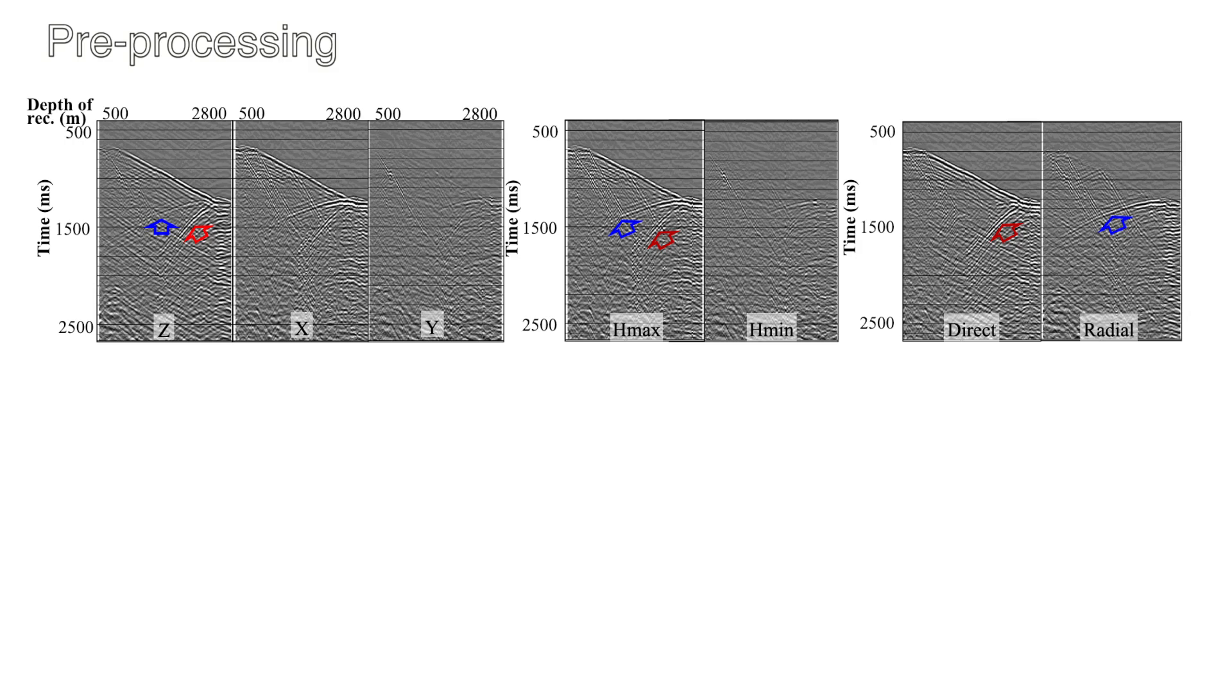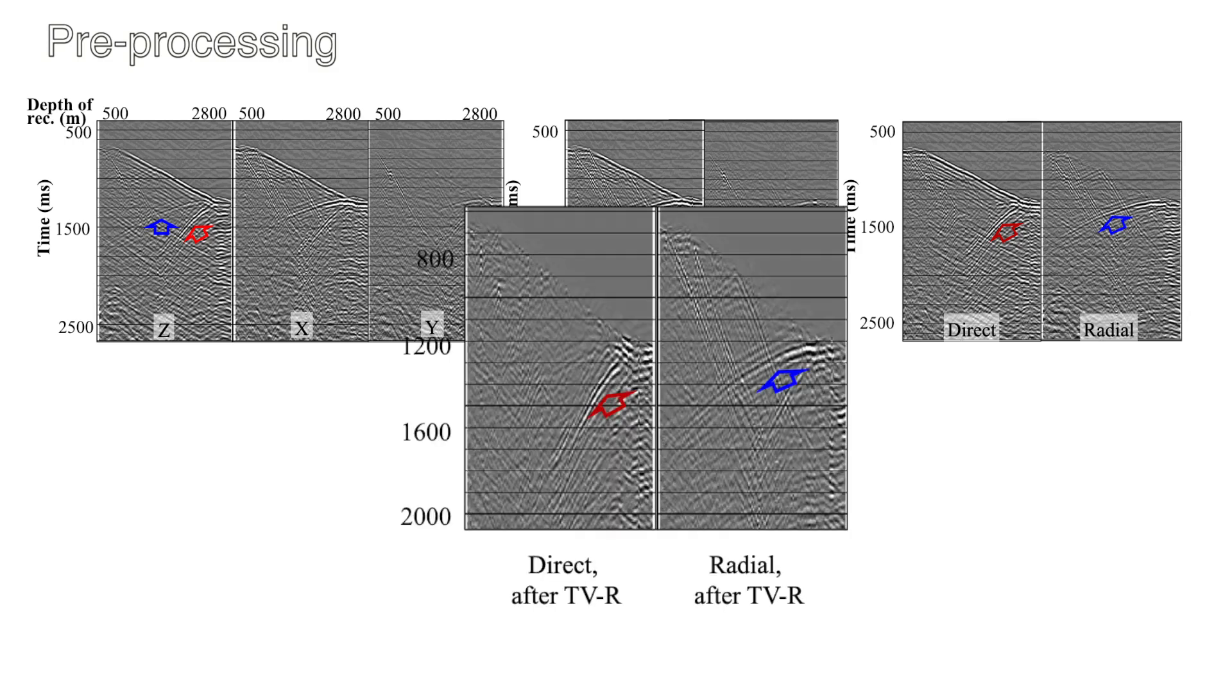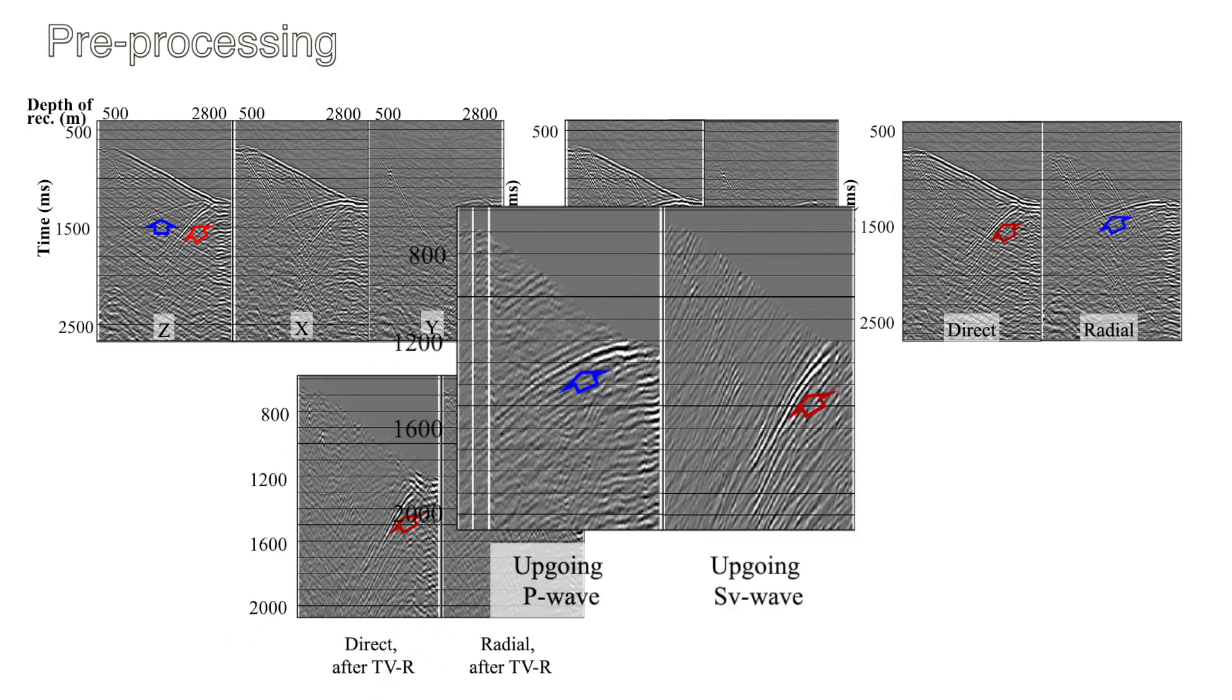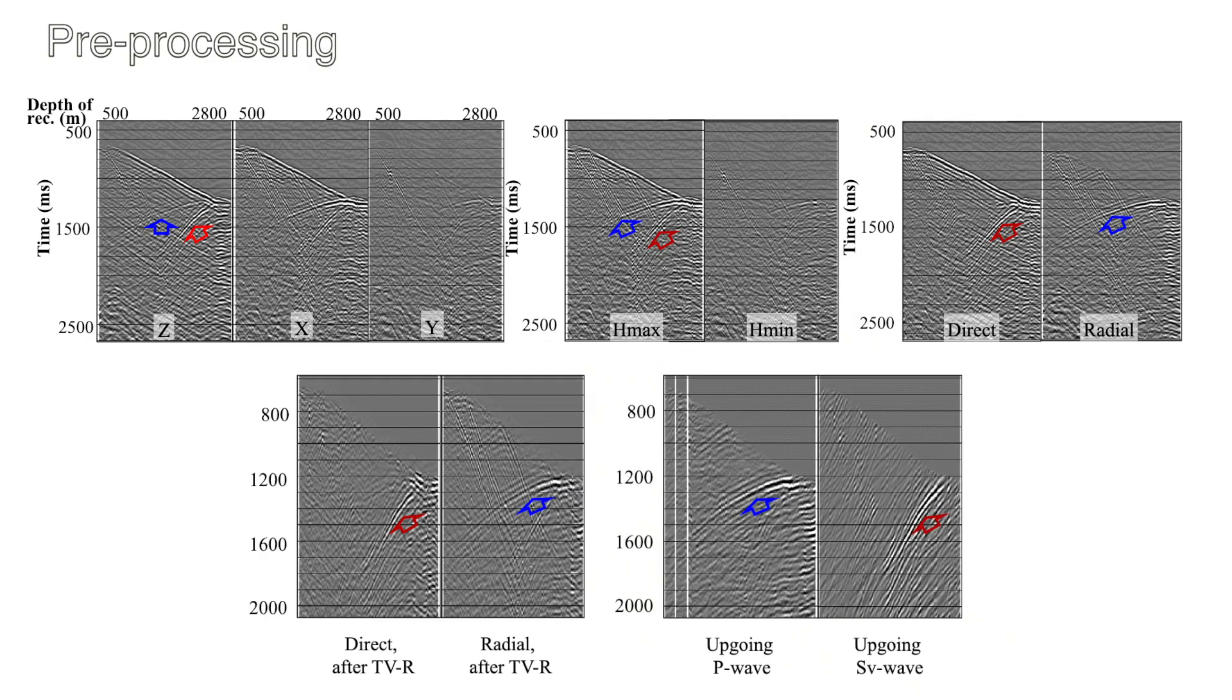The ray tracing based time variant rotation further redistributed the upgoing P wave into one channel and the residuals into another. The P and S wave reflections are gradually separated into two channels. Finally, we applied FK filters and bandpass filters to enhance the upgoing wave field and the deconvolution to improve the resolution and to suppress the multiples.